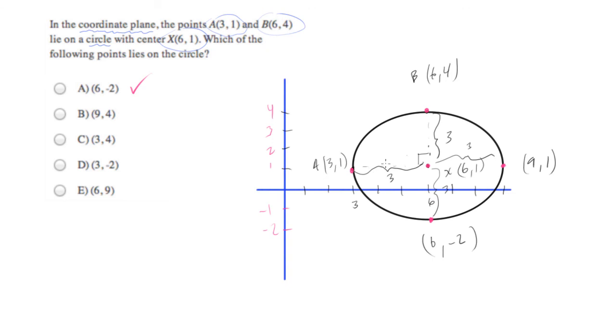And here again we're using the properties of a circle being symmetrical. We know the center and two points on it. So we can figure out at least two other points on it fairly easily just by using the symmetry and by counting.